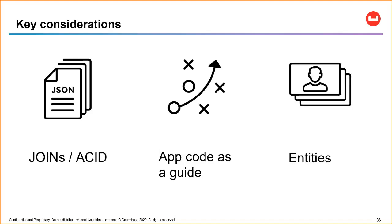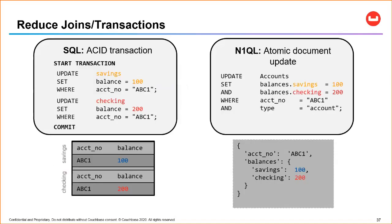One way to reduce joins and transactions: suppose a user has a checking account and a savings account — two rows in a relational model. Transferring between them requires a transaction to update both rows. However, if they were in the same document in Couchbase — say, a nested object called 'balances' — you could update them both without a transaction overhead, while still having the flexibility to add other accounts under balances. This is an example of optimization: combining documents to reduce transaction and join pressure.